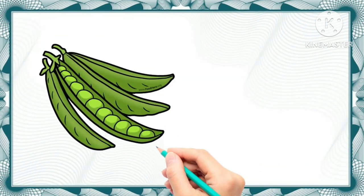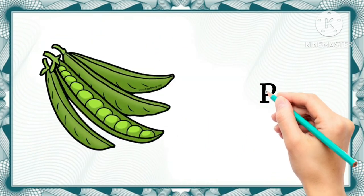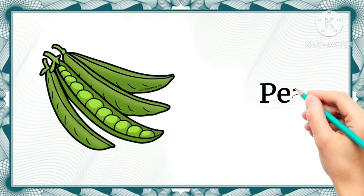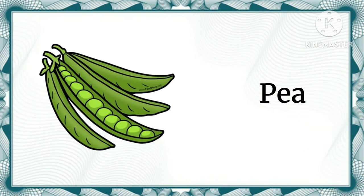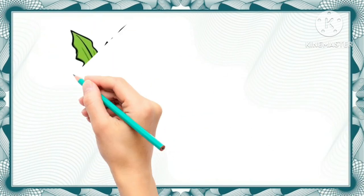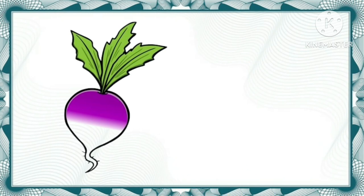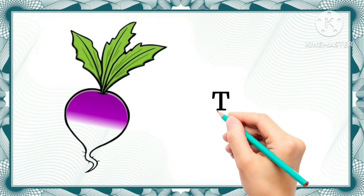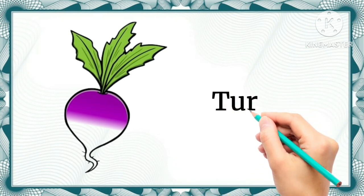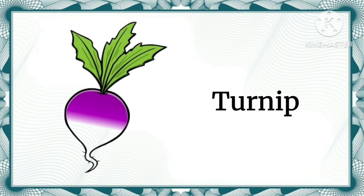Broccoli. Pea - this vegetable is pea. Turnip - this is turnip.